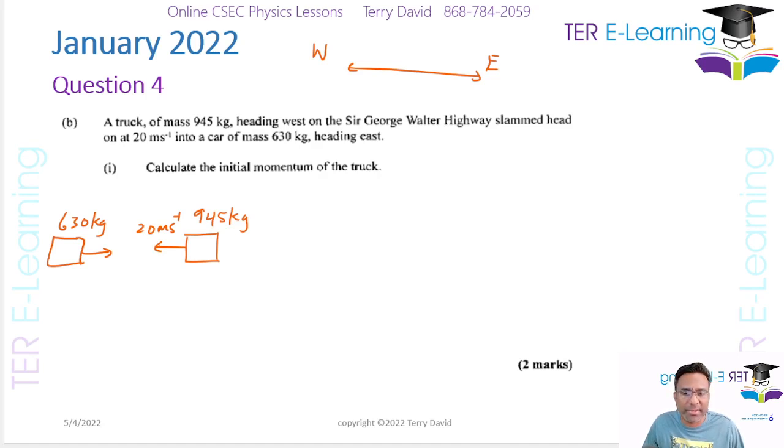We're going to use P equals M multiplied by V, and the mass of the truck is 945. Whenever we're dealing with momentum questions, we use a sign convention. What I normally do is take anything traveling eastward as positive and anything traveling west as negative. Therefore, I'm going to use the velocity as minus 20.